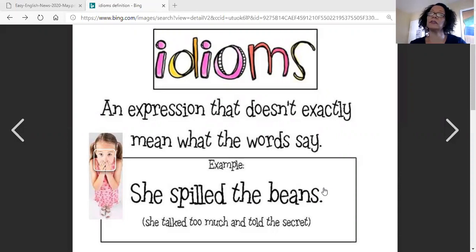If I tip it over and I spill it, the water will come running out. If someone spills beans, that means they tip over maybe a can or a bowl and all the beans come spilling out, come running out. But in actuality, she spilled the beans means she talked too much and told the secret. It was something that wasn't supposed to be shared, but she talked too much and she told the secret. She spilled the beans.